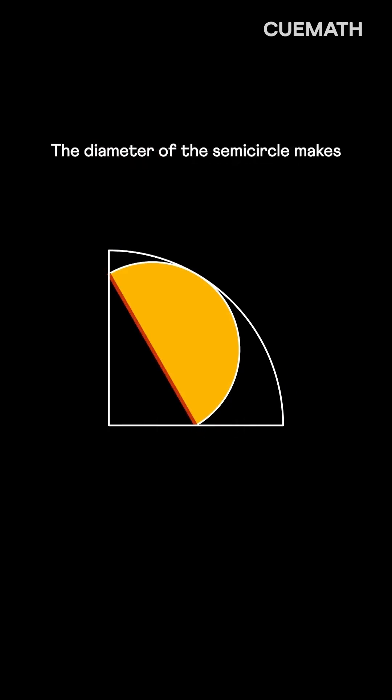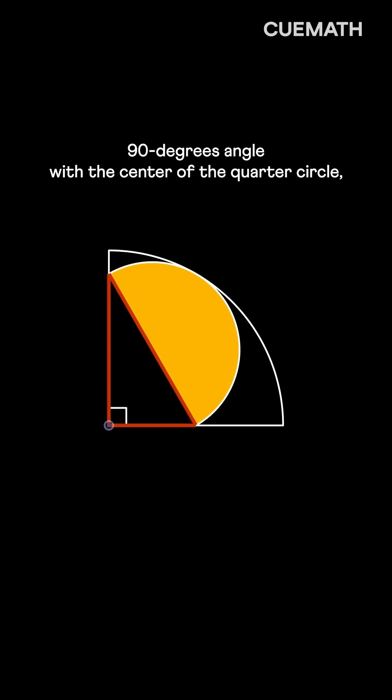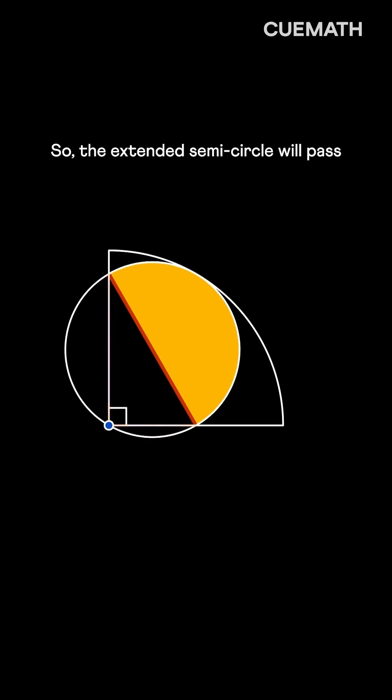The diameter of the semicircle makes 90 degrees angle with the center of the quarter circle. So, the extended semicircle will pass through the center of the quarter circle.